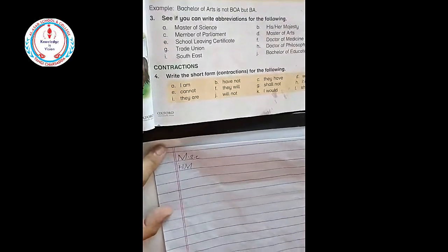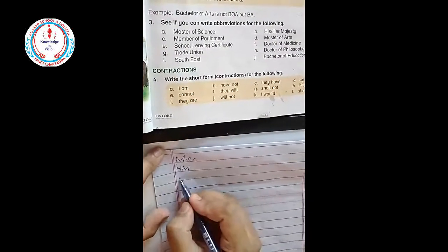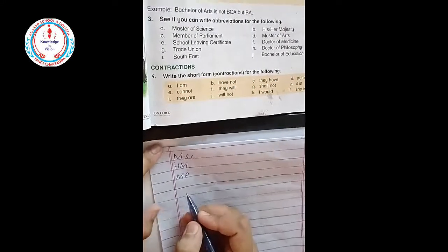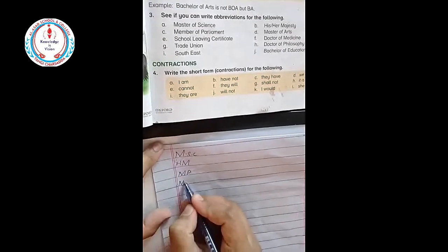Next is Member of Parliament. For Member of Parliament we will write MP. The short form we will write like this.